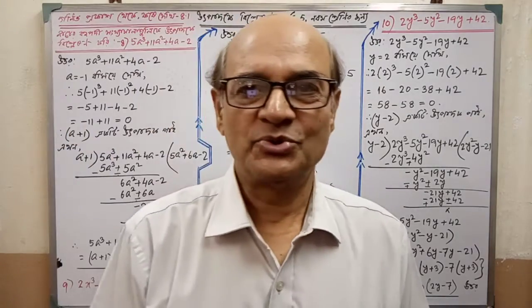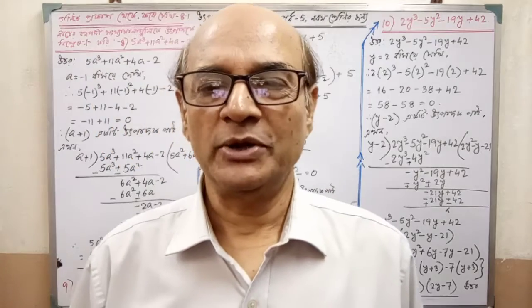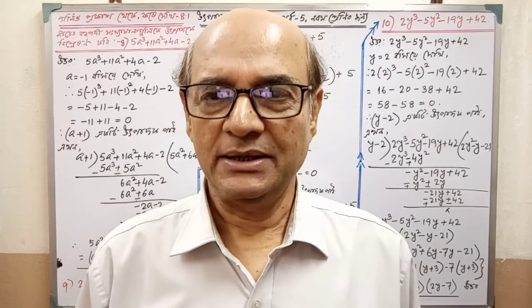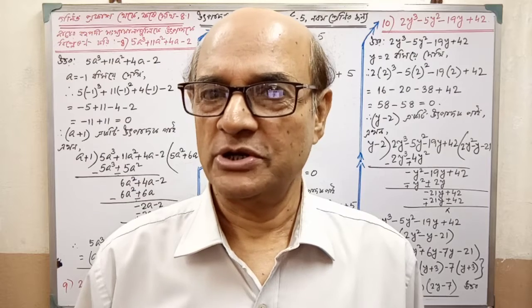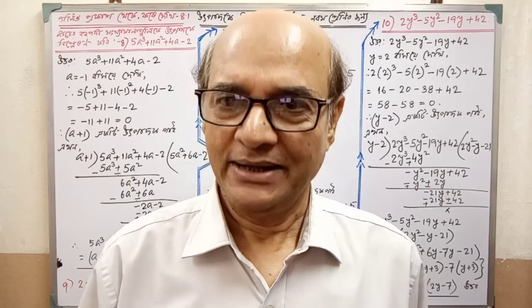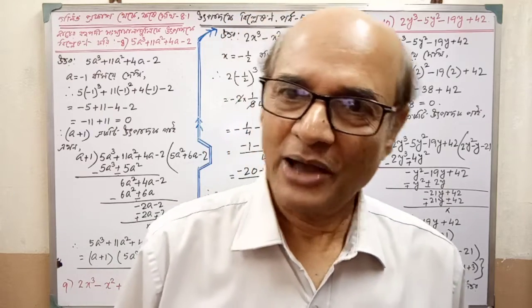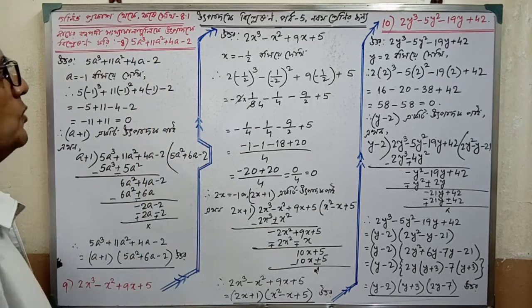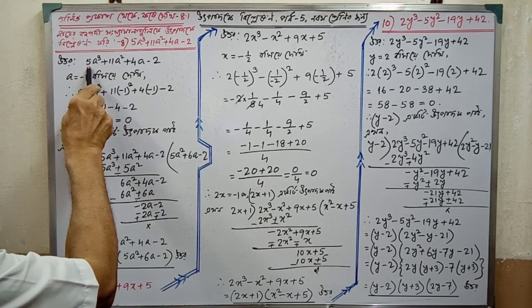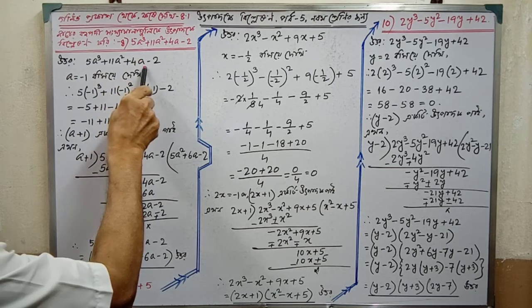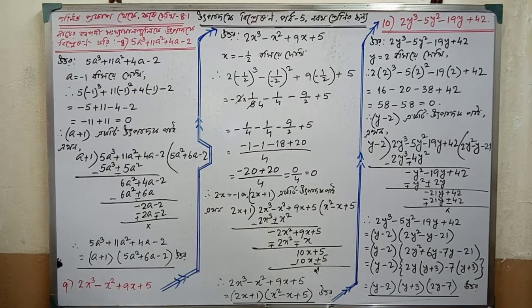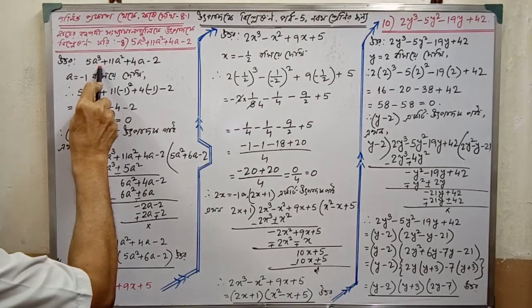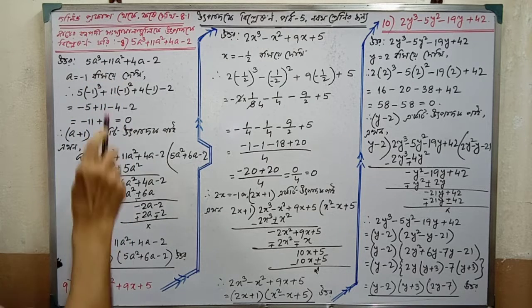Hello children, good morning. Today for Class 9 West Bengal Board, we are doing Udpadoke Bisslestion (Factorization). You have already seen the 4th lesson where factorization by the vanishing method was shown. Here some remaining parts will be explained. Please write carefully. This is from Gonit Prokash, exercise 8.1.